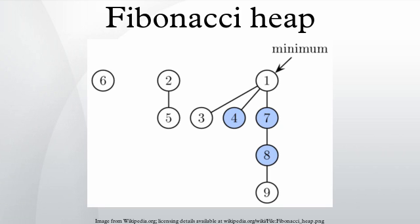In the process we create some number, say k, of new trees. Each of these new trees except possibly the first one was marked originally but as a root it will become unmarked. One node can become marked. Therefore, the number of marked nodes changes by -(k-1) + 1 = -k + 2.